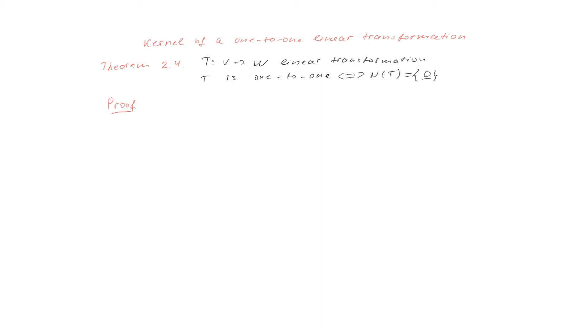We will look at the proof. This is an if and only if statement, so we have to prove it both directions and we will start in this direction. Given that T is one-to-one, we will prove that kernel consists only of a zero vector.